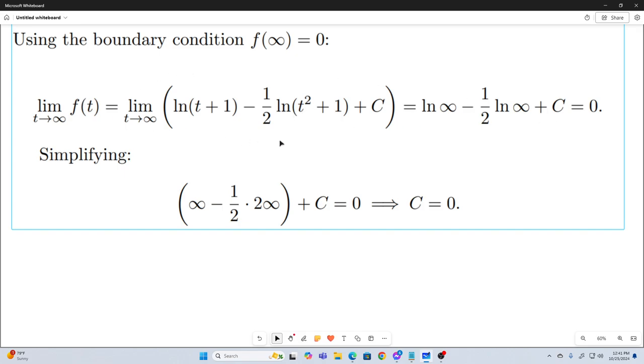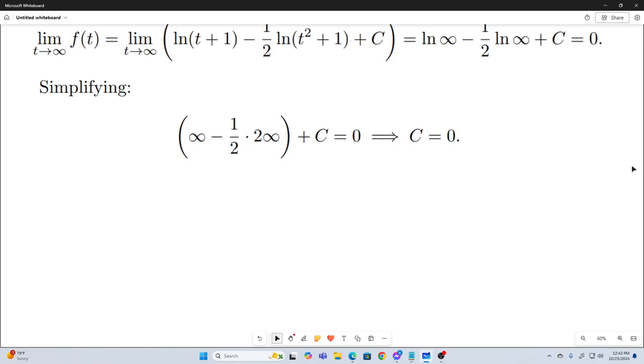I didn't explain this very well, but basically what you can do is rewrite this t plus one as one half t plus one all squared. And then you'll see if you take the limit, this limit does go to zero and you can figure that out easily enough for yourself. And we will get c is equal to zero as a result.